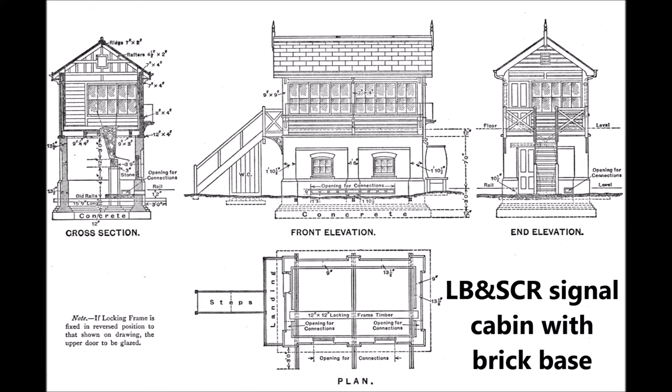Working Without Signals. Signals may be dispensed with on single lines under the following conditions. First, that all stations and siding connections upon a line worked by one engine only, or two engines coupled together, carry a staff when all points are locked by such staff. Second, that any intermediate siding connection upon a line worked under the train staff and ticket system, or under the electric staff or tablet system, when the points are locked by the staff or tablet. And third, that intermediate stations which are not staff or tablet stations upon a line worked under the electric staff or tablet system, sidings if any being locked as in the first two instances.